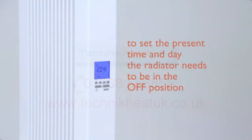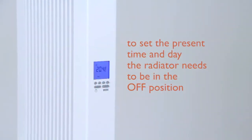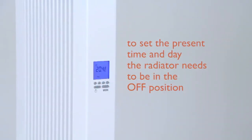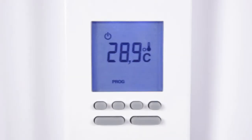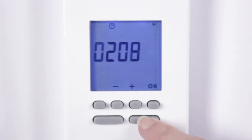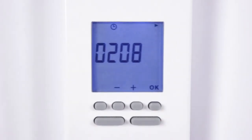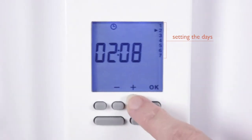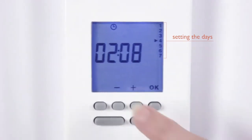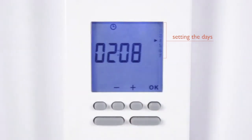To set the present time and day, the radiator needs to be in the off position. Press the MODE key and the days will flash on the right-hand side. Press the plus or minus buttons to select your chosen day.